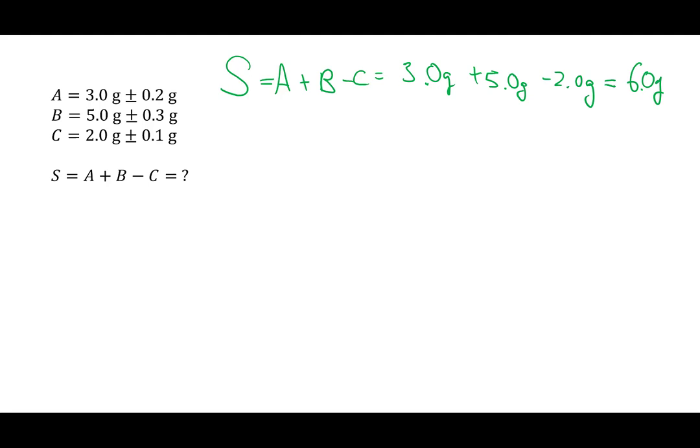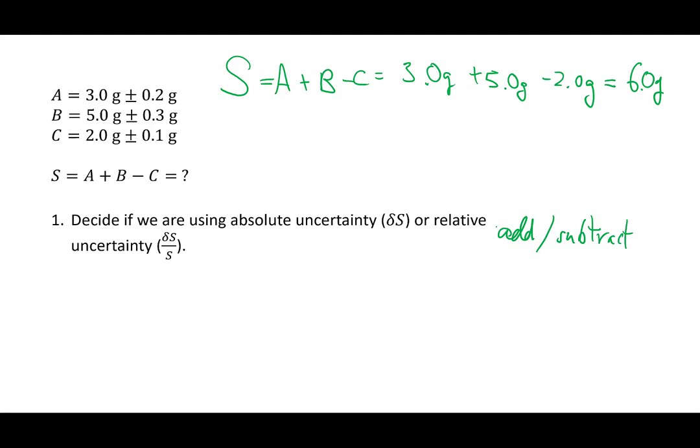Now let's worry about the uncertainty. The first step we already did, is to decide whether we're using absolute or relative. And since we're doing adding and subtracting, we're using absolute uncertainty. So you can get that started. Delta S. Then the next step is basically to list out all the variables in the calculation. In this case there's A, B, and C. And since we're dealing with absolute uncertainty, we're dealing with the absolute uncertainty of A, B, and C.